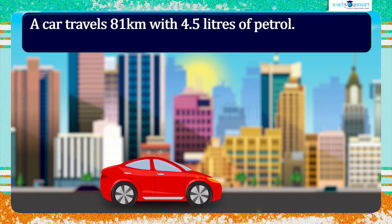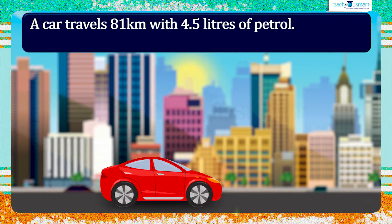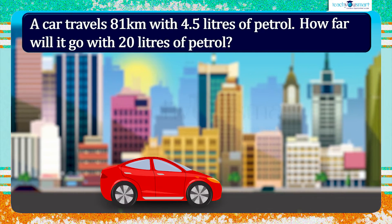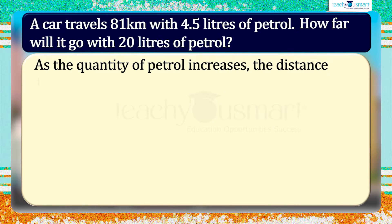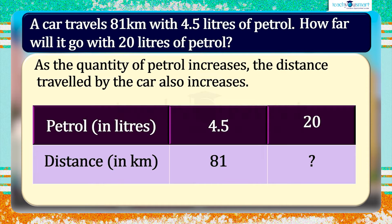A car travels 81 kilometers with 4.5 liters of petrol. How far will it go with 20 liters of petrol? We know, as the quantity of petrol increases, the distance traveled by the car also increases. Given a car travels 81 kilometers with 4.5 liters of petrol, we have to find the distance traveled with 20 liters of petrol. This is a case of direct proportion.